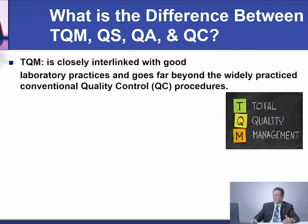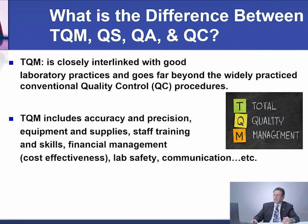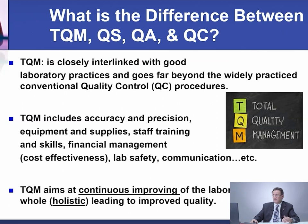What is the difference between total quality management, quality system, quality assurance, and QC? Total quality management is closely interlinked with good laboratory practice and goes far beyond conventional quality control procedures. It includes accuracy and precision, equipment, supplies, staff training, skills, financial management (cost effectiveness), lab safety, communication, etc. Total quality management aims at continuous improvement of the laboratory as a whole — holistically — leading to improved quality.